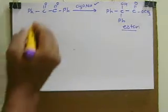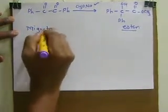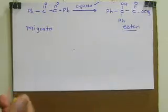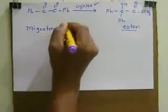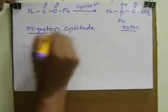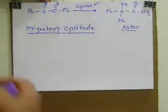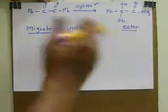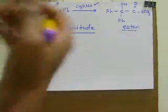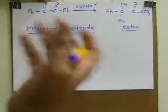The second feature of this rearrangement involves migratory aptitude — a term that comes up whenever we discuss any kind of rearrangement reaction. Migratory aptitude is simply the tendency of any atom or group to migrate, i.e., to change its position from one atom to another. This tendency depends on various factors such as the presence of electron withdrawing groups, electron donating groups, and other factors.